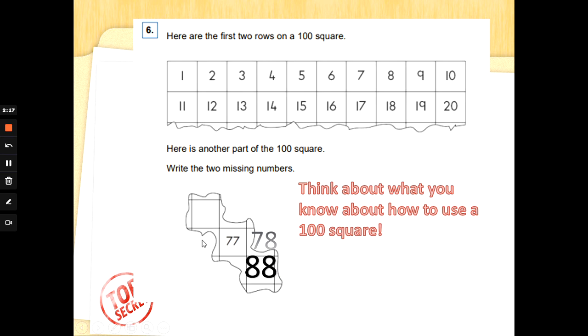Then what would that number be? Because that would help me go up in tens. So 78, 77, that would be 76. Jump up 10, that would be 66. You can't just write 76, 77, 78, because look how the numbers are placed on that 100 square.